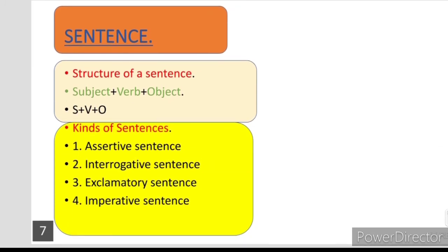Structure of a sentence: subject plus verb plus object. Subject yani fail kam karne wala, verb yani fail, object yani maful jis par kam kiya jaye. Kinds of sentences: first is assertive sentence, second is interrogative sentence, third is exclamatory sentence, and fourth is imperative sentence.